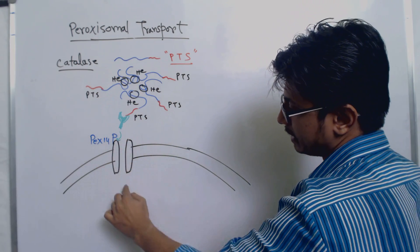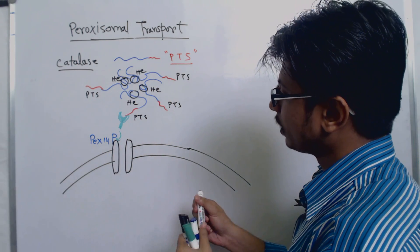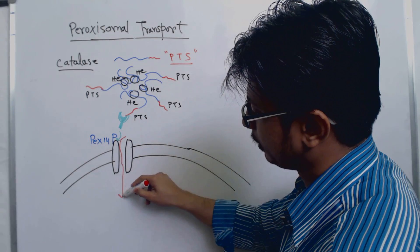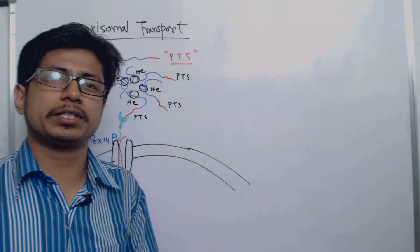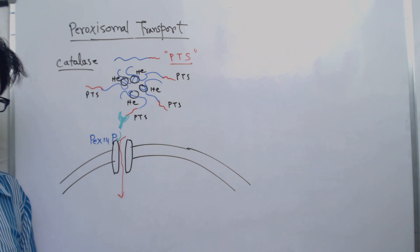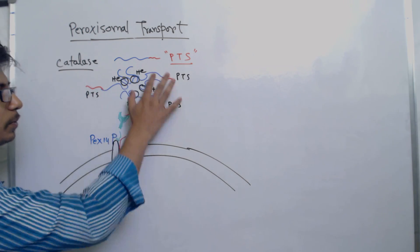Then there will be slow transfer of the polypeptide into the peroxisome. That is the idea of how a protein is transferred inside the peroxisome.